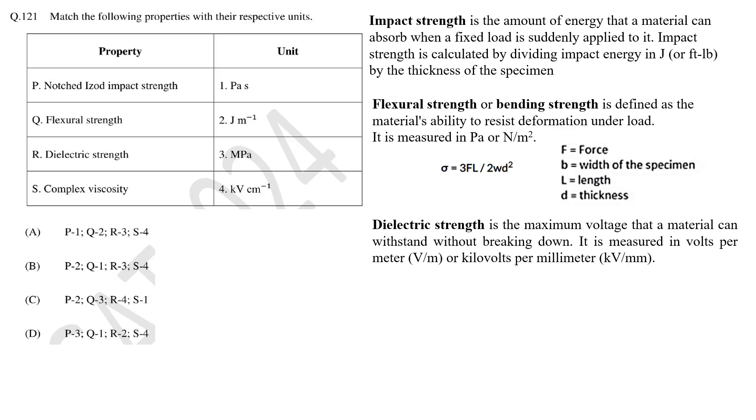The dielectric strength is defined as maximum voltage that can be applied to an insulating material before it goes into breakdown. Dielectric strength is calculated by dividing the breakdown voltage by the thickness of the sample. The unit of dielectric strength is volts per meter or volts per centimeter. So unit 4 matches with dielectric strength. Viscosity is measured by dividing shear stress by shear rate which gives unit of Pascal second. So unit 1 matches with complex viscosity. So the correct answer is option C.